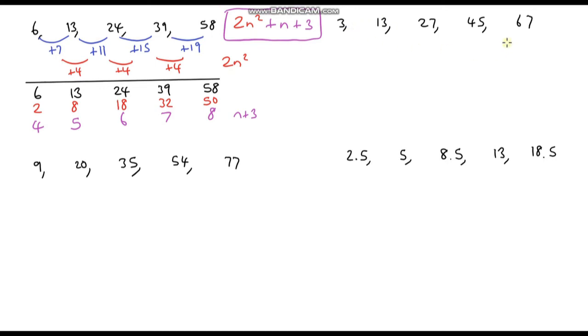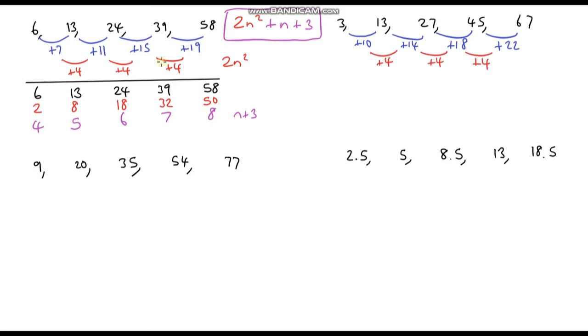Let's do this next sequence. First let's work out the first difference, and now the second difference. Just like the previous one, the second difference is exactly the same — we're adding 4 each time. So half of 4 is 2, and it's going to be 2n squared.